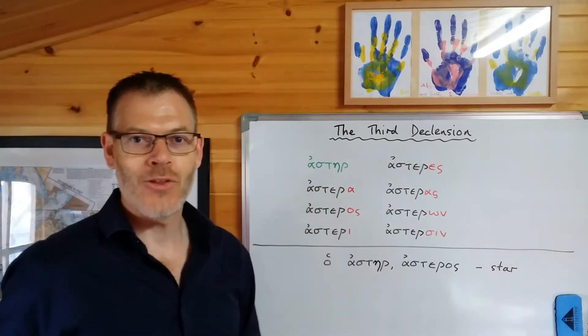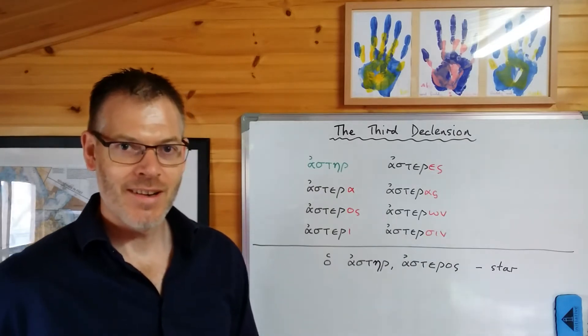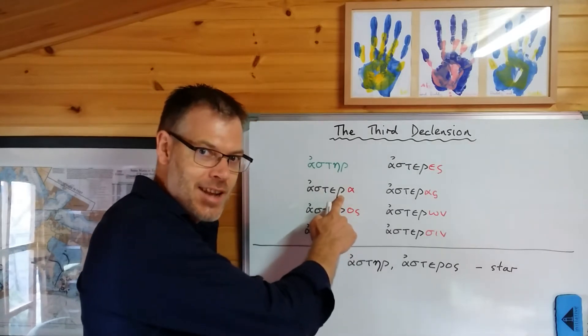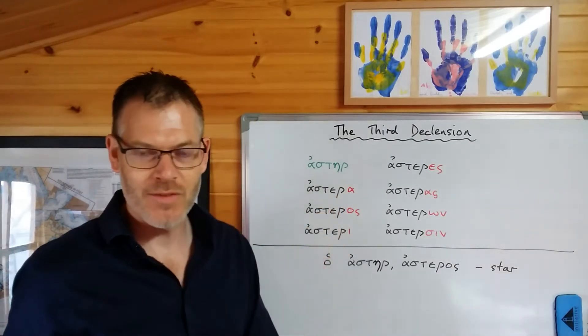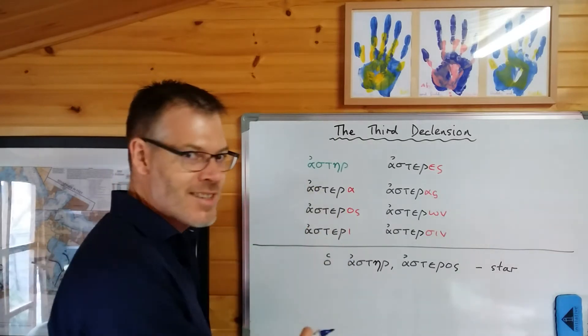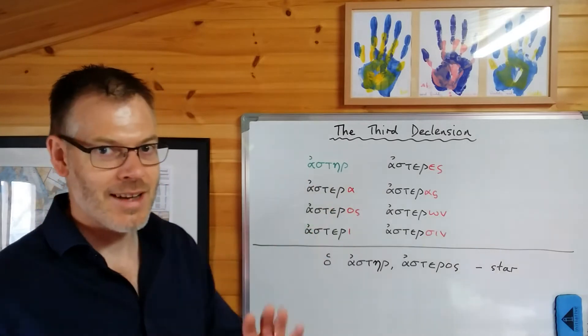They are the endings for the masculine third declension noun, which has a consonant at the end of the stem. We'll come to some others with vowels at the end of the stem shortly. But for nouns like this, these are the ones you've got to learn. And they're very, very common. And you find these endings, as I said, scattered elsewhere.